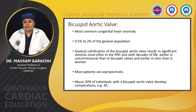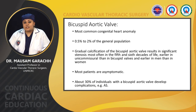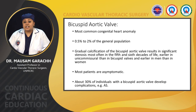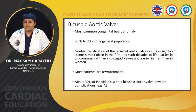The bicuspid aortic valve is the most common congenital heart anomaly, accounting for about 0.5–2% of the general population. Gradual calcification of the bicuspid aortic valve results in significant stenosis, most often in the 5th and 6th decades of life, earlier in unicommissural than bicuspid valves, and earlier in males than females. Most patients are asymptomatic. About 30% of individuals with bicuspid aortic valves develop the complication of aortic stenosis.